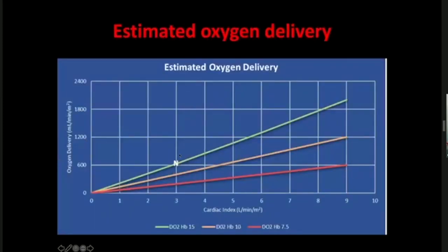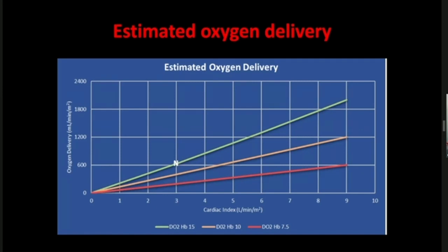Hemoglobin plays a very important role in oxygen delivery. Comparing two curves: when the patient's hemoglobin is about 15 versus 7.5 (half), for the same blood flow the oxygen delivery is much higher when hemoglobin is higher — in fact it is double. This is simply explained by going back to the oxygen delivery equation.